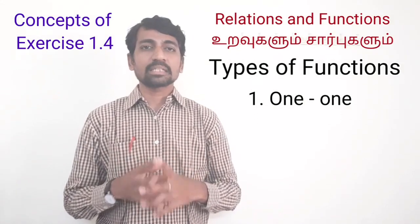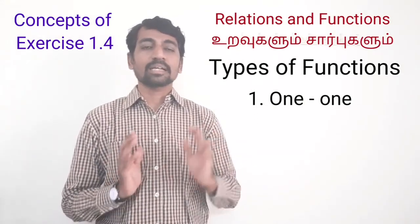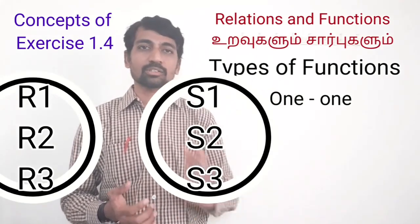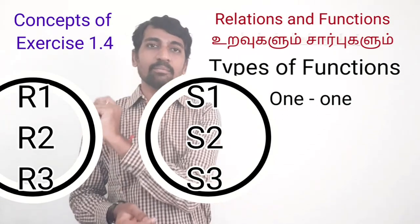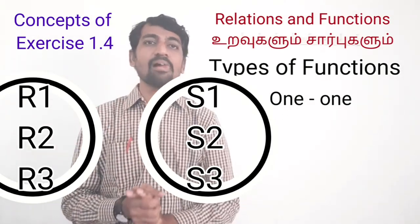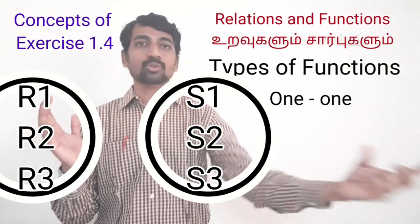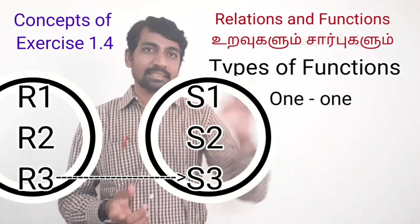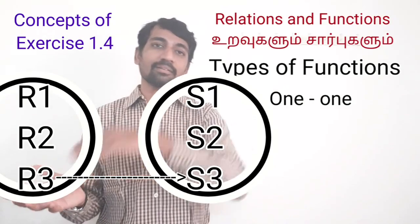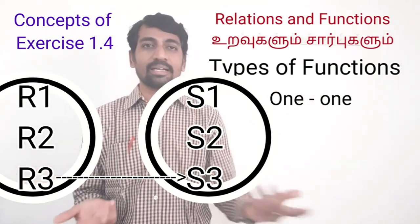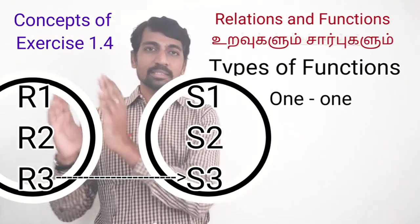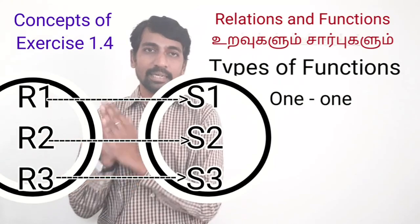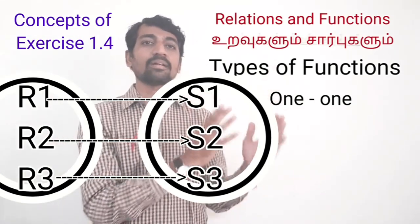A practical example of a one-to-one function: consider a classroom with students and roll numbers. Students S1, S2, S3 up to S30 are in set A, and roll numbers R1, R2, R3 are in set B. Each student is connected to a unique, distinct element of set A mapped to a distinct element of set B.